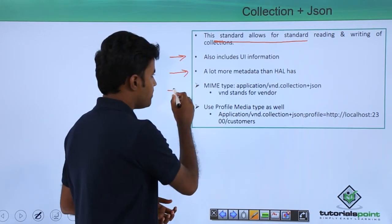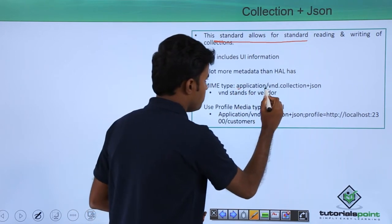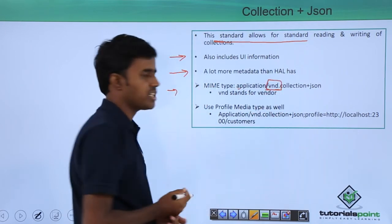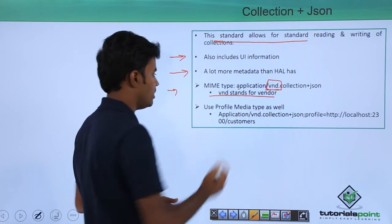The MIME types are usually application/vnd.collection+json, where VND stands for vendor.